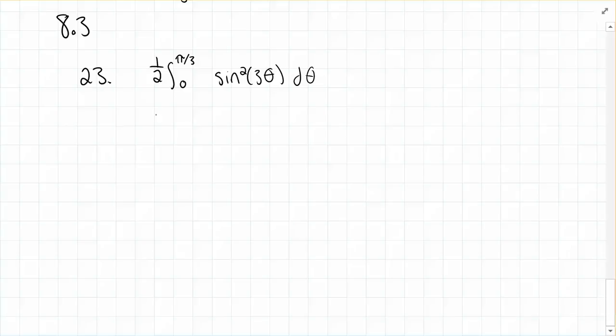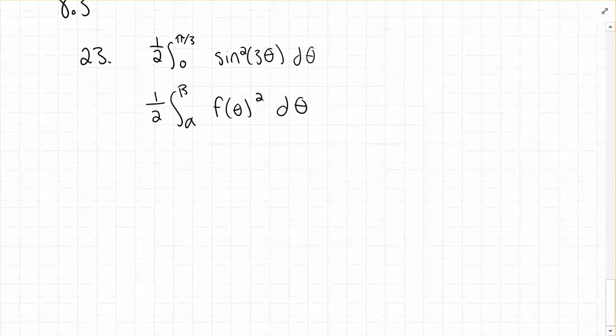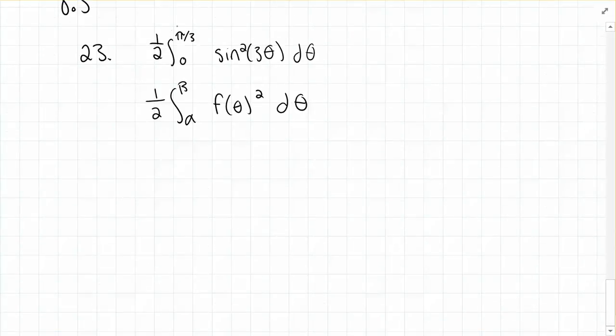So we know that the integral expression for area using polar is one half the integral from alpha to beta of f of theta squared d theta.